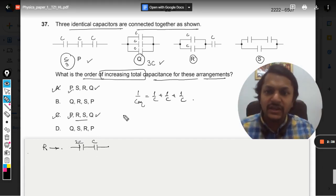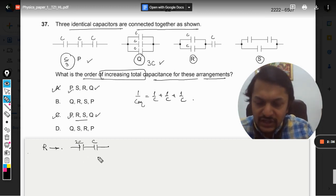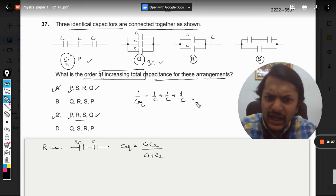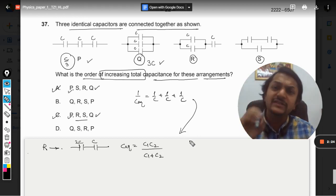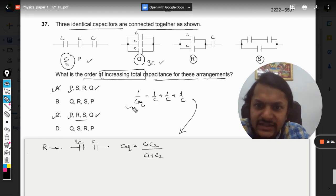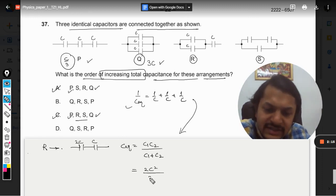So this is 2C and this is C. This becomes our intermediate circuit, and now they are in series. So we can apply this formula: C1·C2/(C1+C2), which can be derived from the series formula. So it will be 2C²/(2C+C), that is 3C. So it is 2C/3.